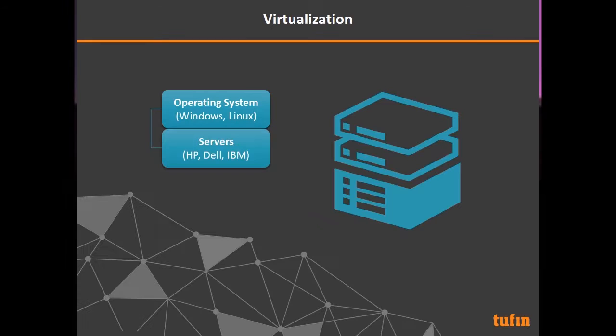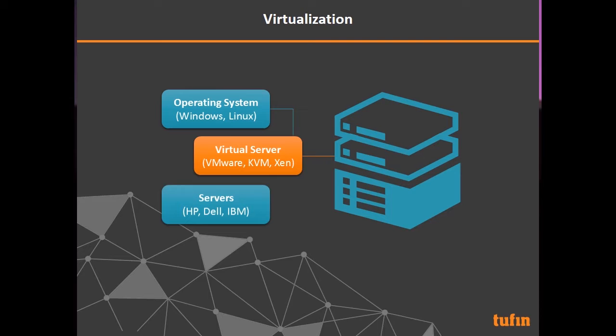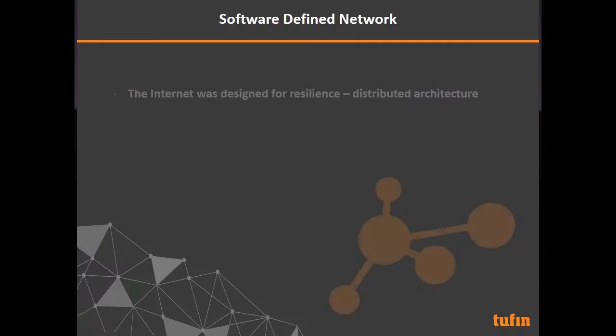Let's look at virtualization first. You used to have operating systems and physical servers, and then came virtualization — VMware, KVM, Xen — with an abstraction layer between the physical and logical layers. From a security perspective, that decoupling actually helped a lot, because instead of managing various platform differences you could focus on the actual security controls.